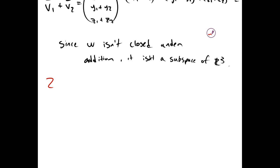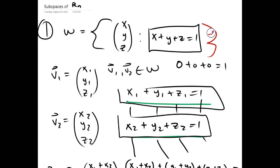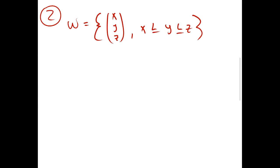Our second problem, we have another subset of R^3. This time we have all points (x, y, z) where x is between x and z. We're asked to see if this is a subspace of R^3. This time we're going to check the scalar multiplication condition.